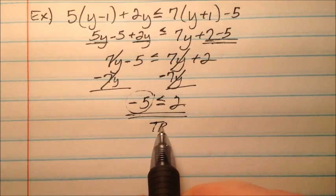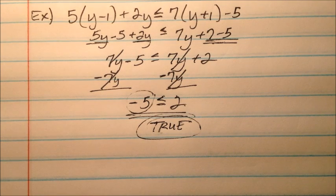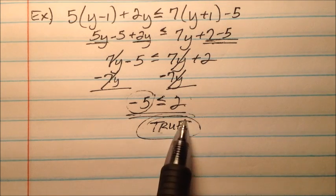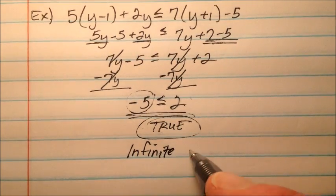So the statement we're left with is true. So similar to our equations, when all the variables cancel, we'll either be left with a true statement or a false statement. In this case, we're left with a true statement, so the answer will be infinite solutions.